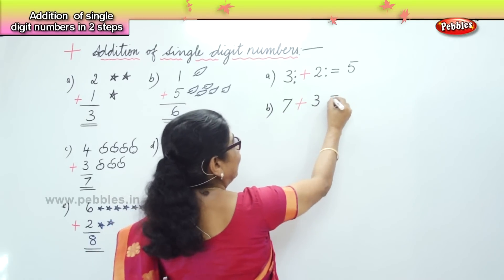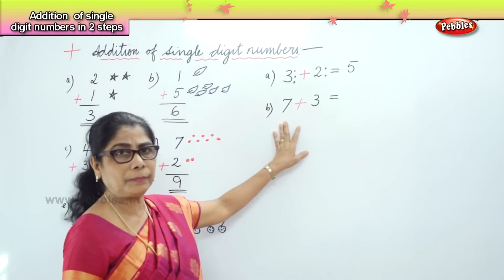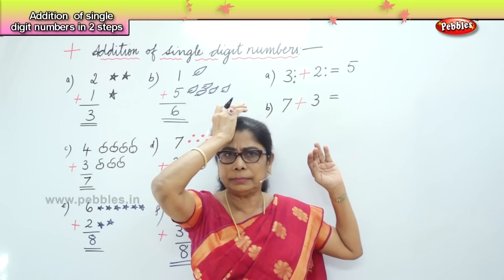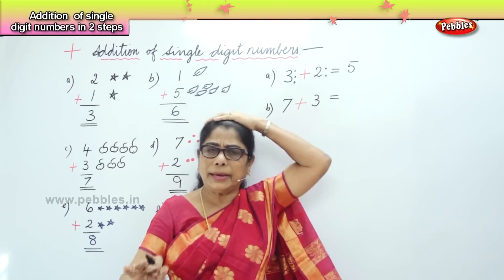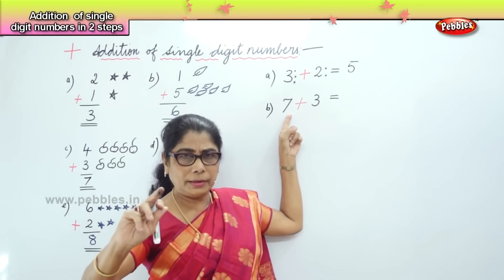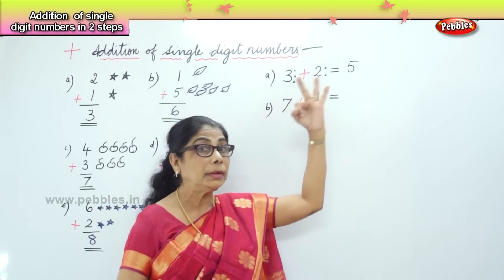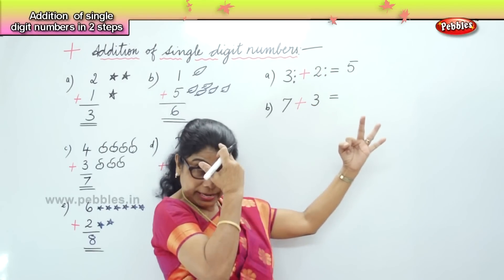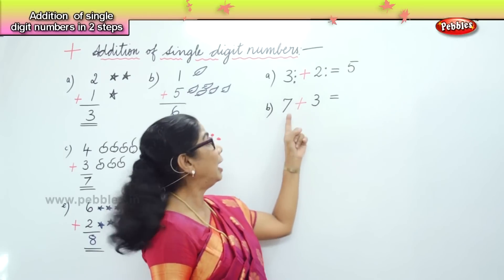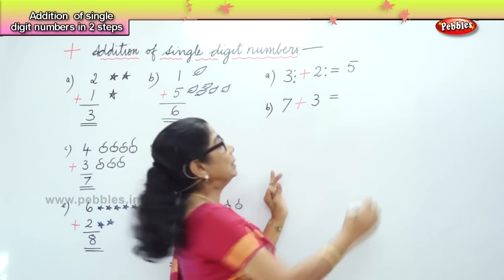What is 7 plus 3? You can also use your fingers to add. Hold 3 fingers up and keep 7 in your mind — the big number. Then count on from 7: 8, 9, 10. After 7, 8, 9, 10. What's the number you got? 10.